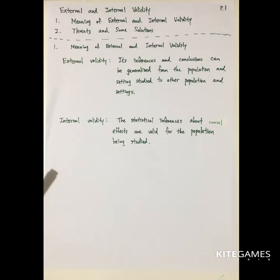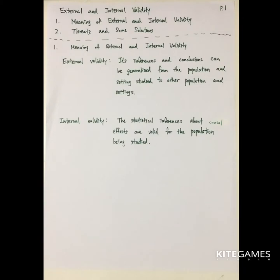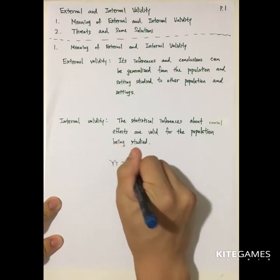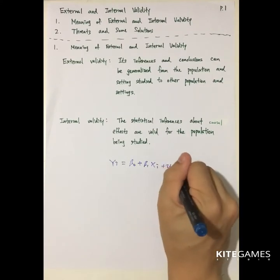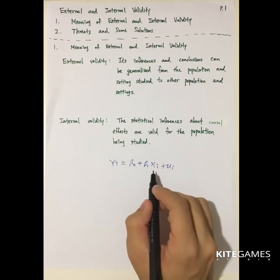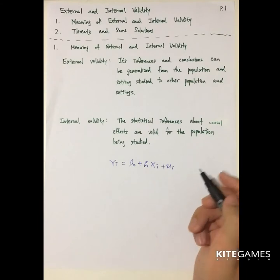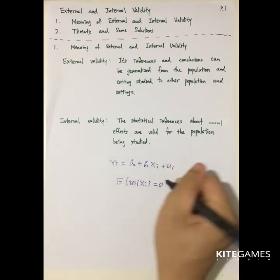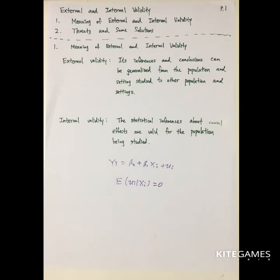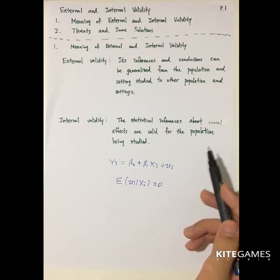Internal validity is defined as the statistical inference about the causal effect being valid for the population being studied. We collect data to see whether beta one can explain the effect of increasing x on increasing y. We need many assumptions, the most important being that the expected value of u given xi is equal to zero. If we cannot satisfy these assumptions, the model is not internally valid.